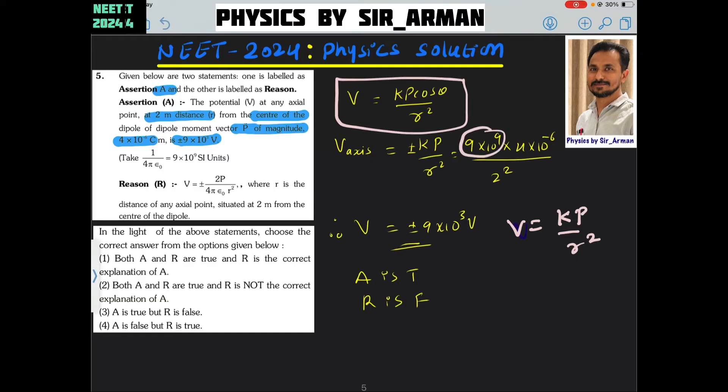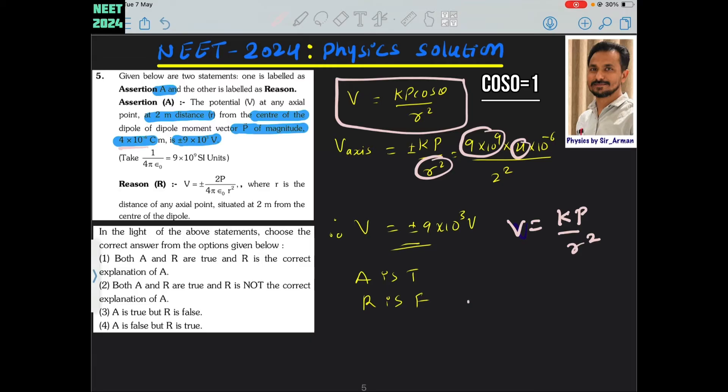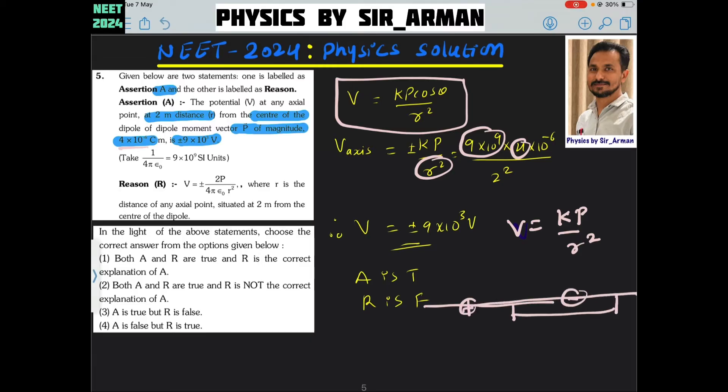Here K we can write 9 into 10 raise to 9, P which is given here, and R is the distance. So if you have a dipole this is positive and this is negative. From the center at distance 2 meter, the electric potential that we have obtained by using this equation is 9000 volt.